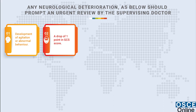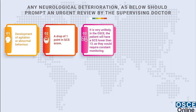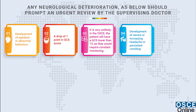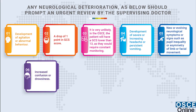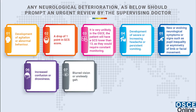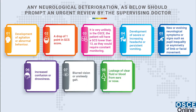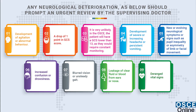Development of agitation or abnormal behaviour, and a drop of one point in GCS score are key indicators. It is very unlikely in the OSCE that the patient will have a GCS lower than 13, as they would require constant monitoring. Development of severe or increasing headache or persistent vomiting, new or evolving neurological symptoms such as pupil inequality or asymmetry of limb or facial movement, increased confusion or drowsiness, blurred vision or unsteady gait, and leakage of clear fluid or blood from ears or nose are all concerning signs.